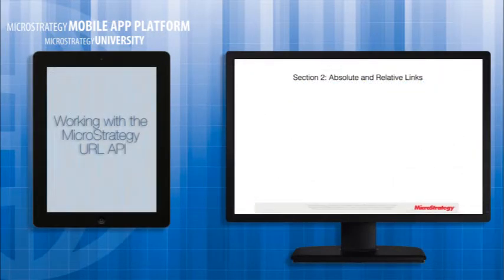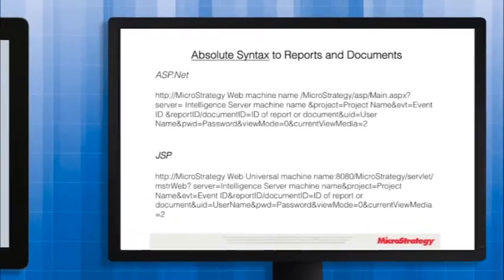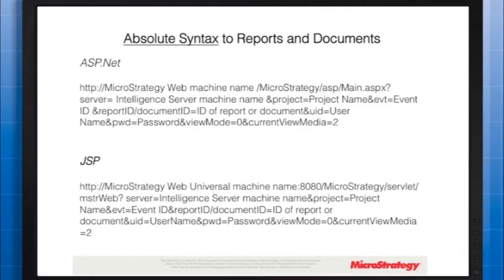Section 2: Absolute and Relative Links to Reports and Documents. When your destination document or report resides on a separate MicroStrategy web server or MicroStrategy mobile server than the source document, you should use the absolute hyperlink path. Since an absolute path provides a specific server name, if its name or IP address changes, the link will not work.